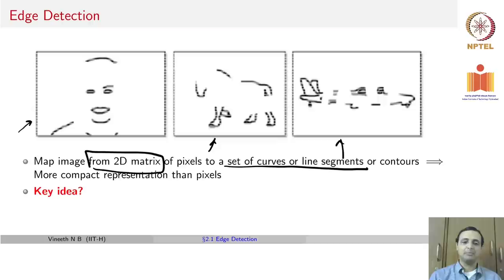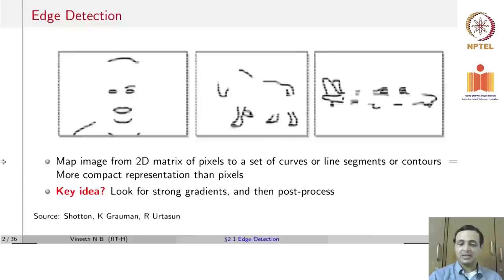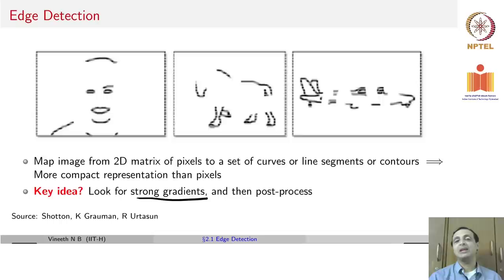We have been introduced to a few concepts with images: convolution, frequency representation, sampling and interpolation. Using the ideas we have studied so far, how do you go about finding edges in images? The key idea is to look for strong gradients and then do some kind of post-processing to get good-looking stable edges.